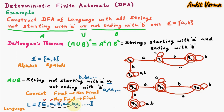For string BA: the first B takes the initial state Q0 to Q3. Then A from Q3 brings us back to Q3, which is a final state. After scanning the complete string we are on a final state, so BA is accepted by the DFA.